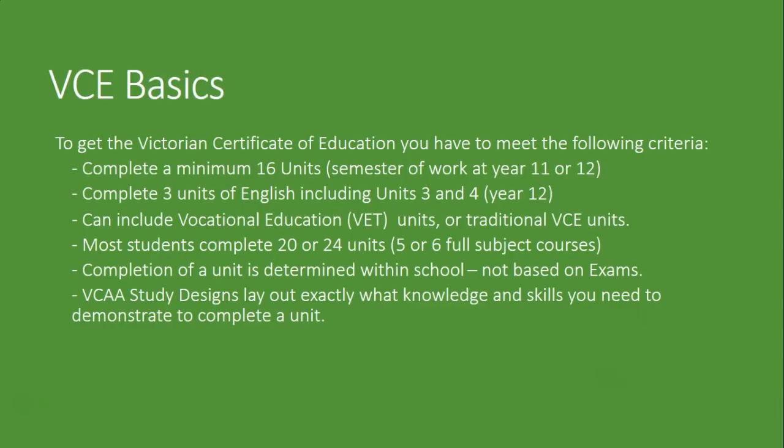Before that, we have to actually get a VCE. We don't get an ATAR unless we pass the VCE. To get the Victorian Certificate of Education, there's a few rules. The main thing is you've got to do at least 16 units and you've got to pass English. Those units can be year 11 or 12 units; they don't all have to be units 3 and 4. Typically people are going to do about 20 or 24 units overall.